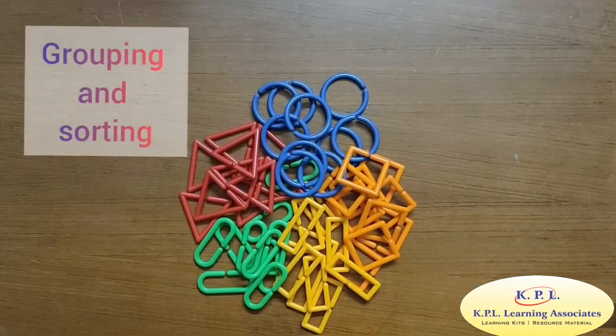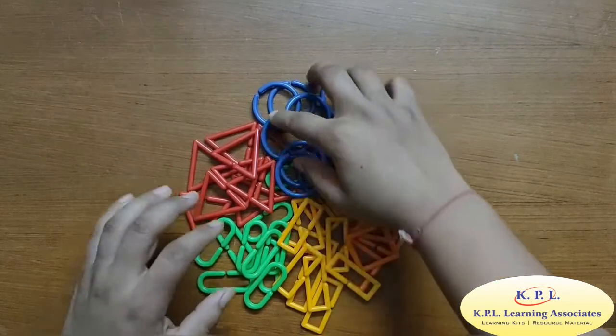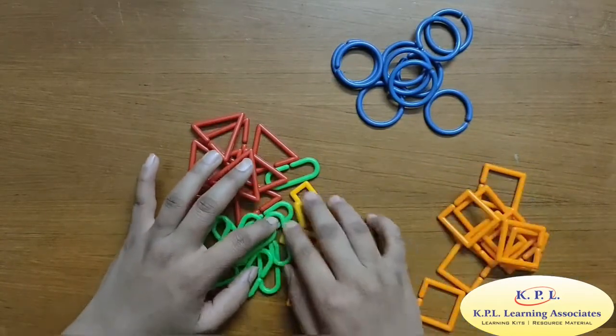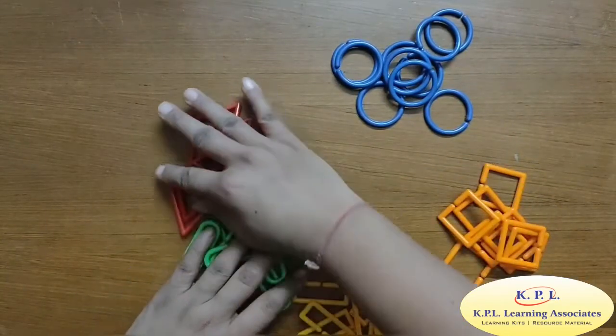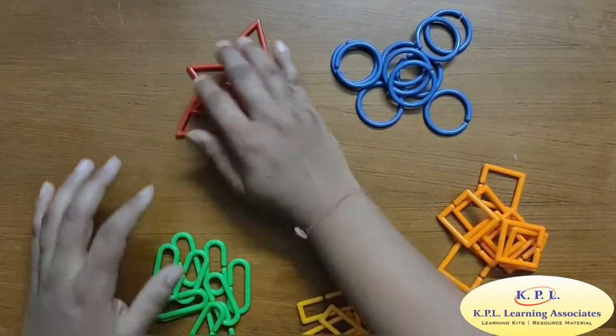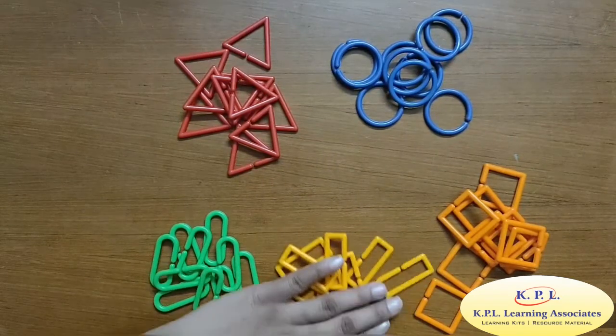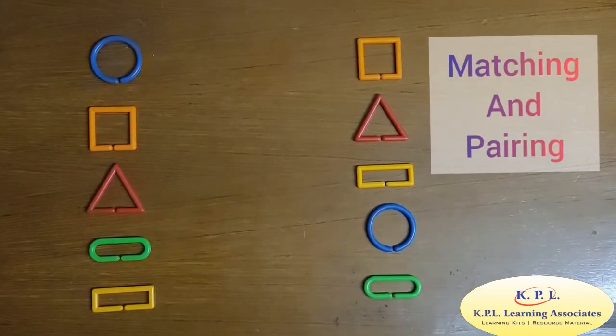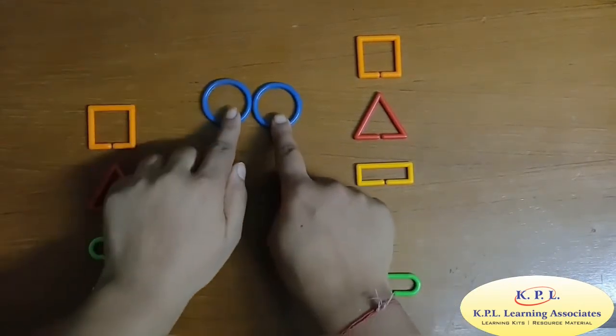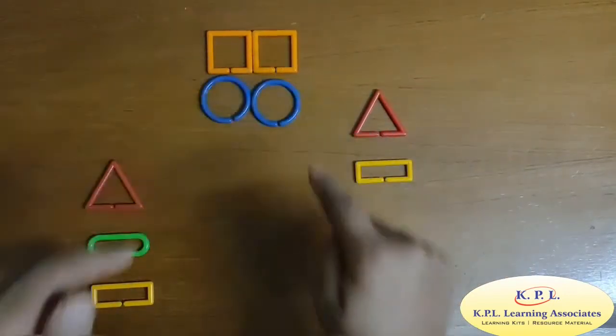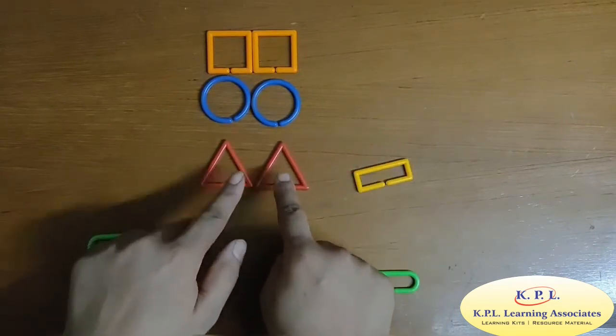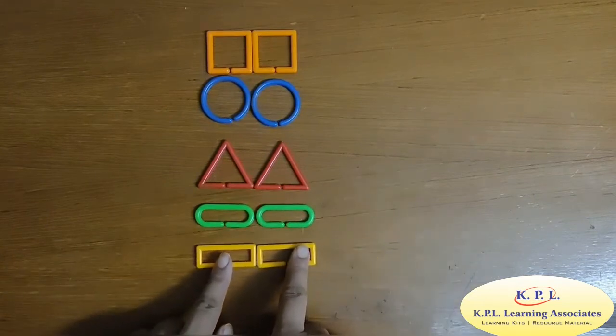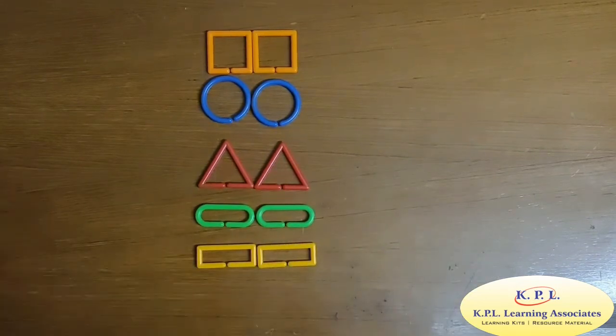Let us group and sort the colors and the shapes. Blue circles, orange squares, yellow rectangles, green ovals, red triangles. Let us match and pair the shapes and the colors. Blue circles, orange squares, red triangles, green ovals, yellow rectangles. So we grouped and sorted. Also, we can match and pair.